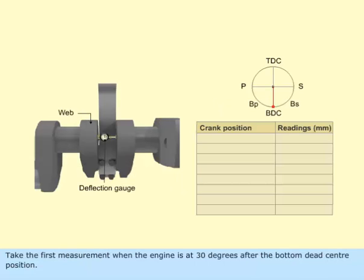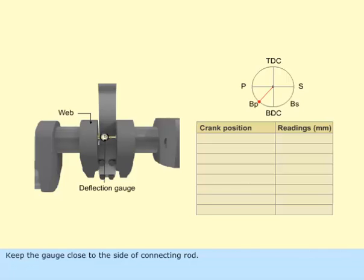Take the first measurement when the engine is at 30 degrees after the bottom dead center position. Keep the gauge close to the side of connecting rod. Set the gauge to zero at this position.